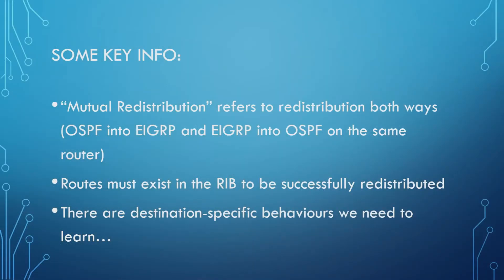Some key information to understand — the basics. Mutual redistribution is when you're going both ways. You could just go from OSPF into BGP and not back, but if you do go both ways that is referred to as mutual redistribution. Next, routes must exist in the routing information base (RIB) to be successfully redistributed. If you try to redistribute an OSPF route that your router does not know about into BGP, it's going to fail because it won't be in the router's RIB. The router needs to know how to get to that route through whatever other routing protocol it's coming from in order to redistribute it anywhere else.